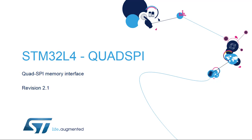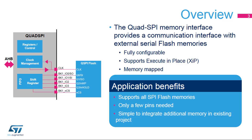Hello, and welcome to this presentation of the STM32 Quad SPI Memory Interface. It covers the main features of this interface, which is widely used for connecting external memories to the microcontroller. The Quad SPI Memory Interface, integrated inside STM32 products, provides a communication interface allowing the microcontroller to communicate with external SPI and Quad SPI memories. This interface is fully configurable, allowing easy connection of any existing serial memories available today on the market.